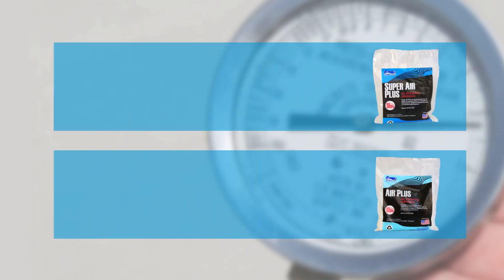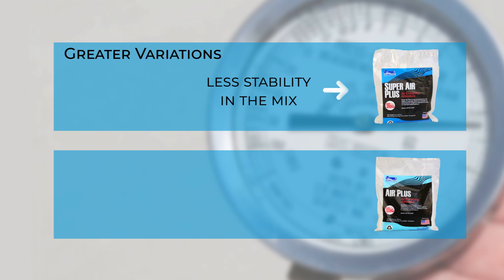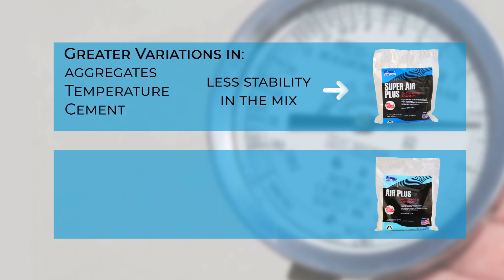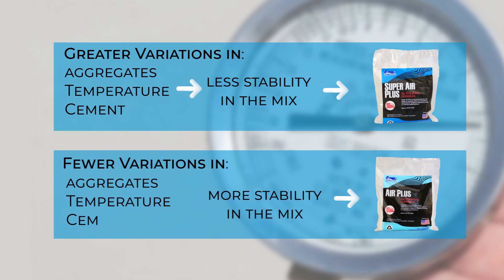So which air entrainer is right for you? Think about your ready mix operations. The more volatility you have with your air content, the more powerful a material you will need. For example, if you have variations in your aggregate supply, variations in your cement contents, or extreme temperature changes, you will probably want to have Super Air Plus on hand. But if you have stable aggregate supply, fewer mix design variations, and a consistent climate, then Air Plus is probably all you will need.